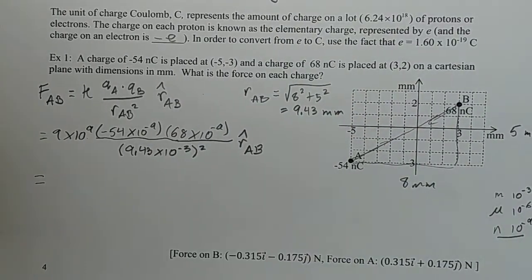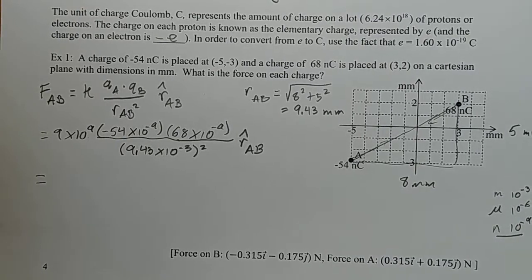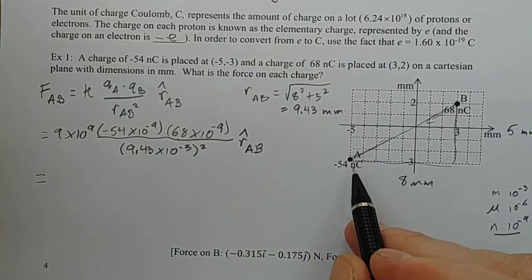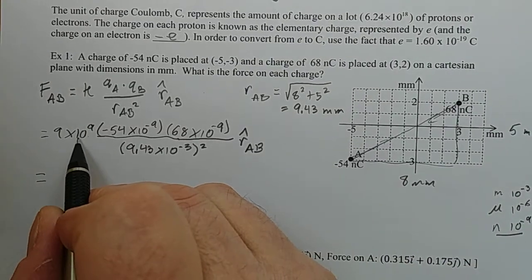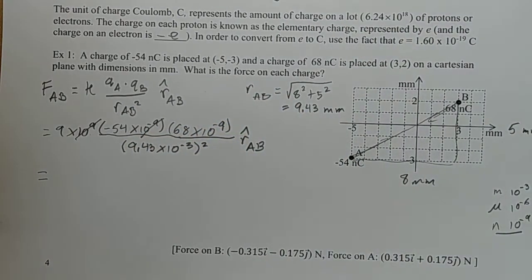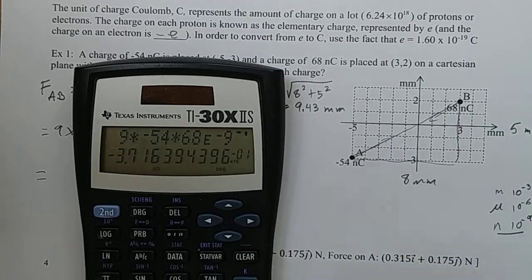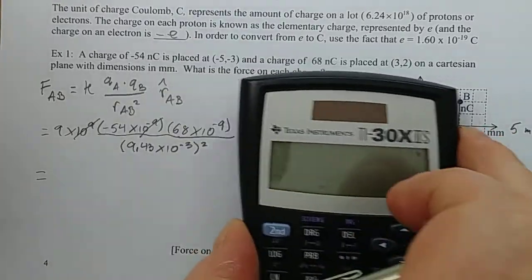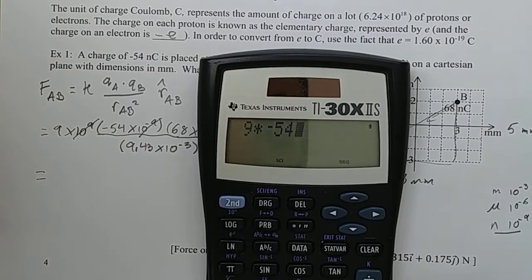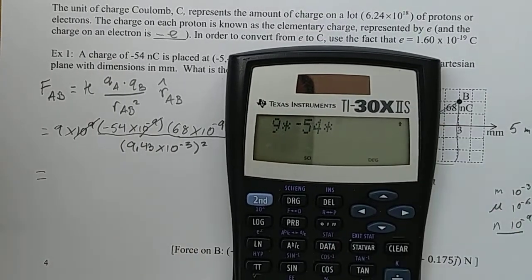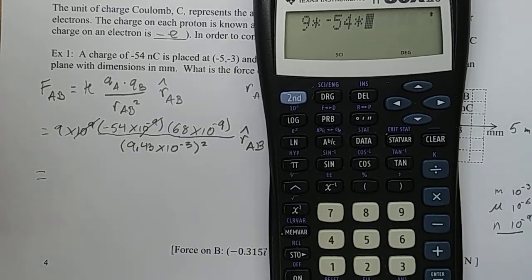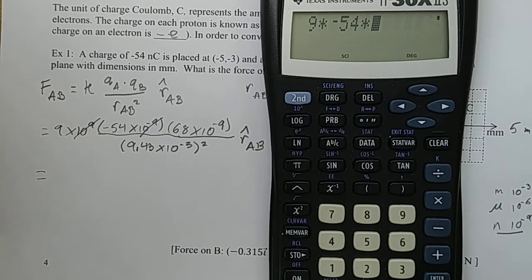Let's look at how to do this calculation. I want to make sure that you can do this calculation efficiently using your calculator. One thing that will often happen because we're often dealing with nanocoulombs is we have 10 to the 9 times 10 to the negative 9. 9 plus negative 9 is 0. So I'm just going to cross those out. And now I'm going to do this on my calculator and we'll see how we do this.